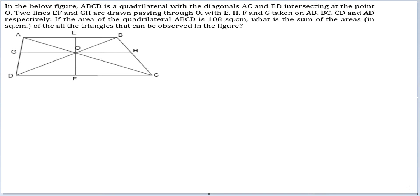If the area of the quadrilateral ABCD is 108 square centimeters, what is the sum of the areas in square centimeters of all the triangles that can be observed in this figure? Now this is typically the kind of question that I don't like solving.